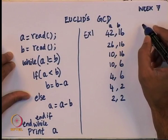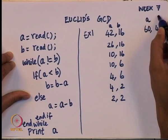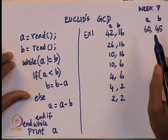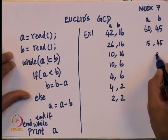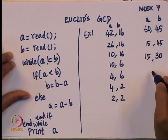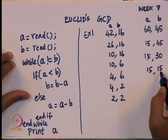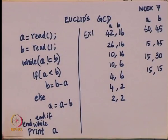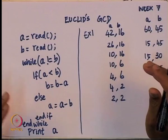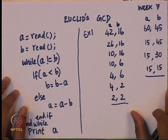Let me take another example: the GCD of 60 and 45. A is 60 and B is 45. So 60 minus 45 is 15, and we have 15 and 45. Since 45 is greater than 15, I subtract 15 from 45 to get 30, giving 15 and 30. Again 30 is greater than 15, subtract to get 15 and 15. At this point both A and B are equal and we have GCD is 15.